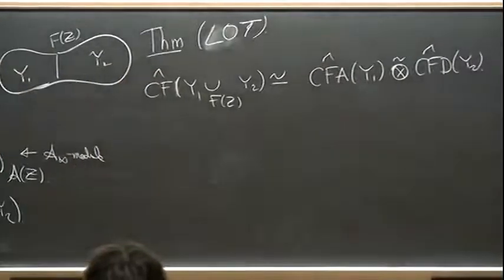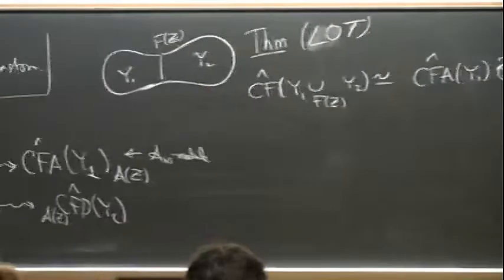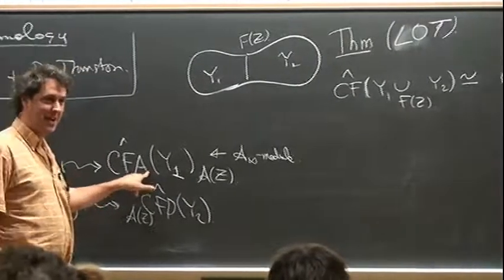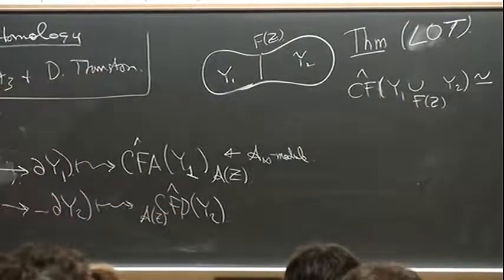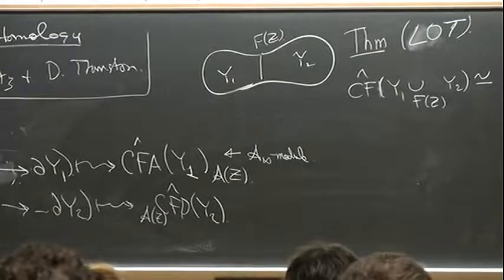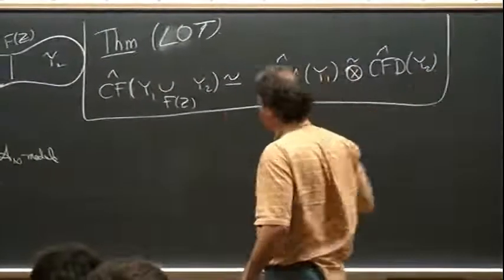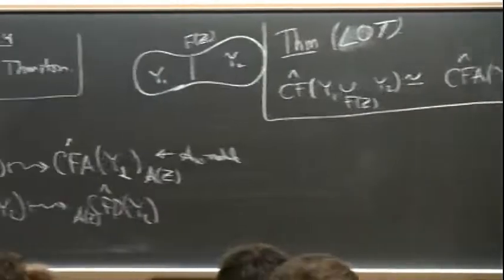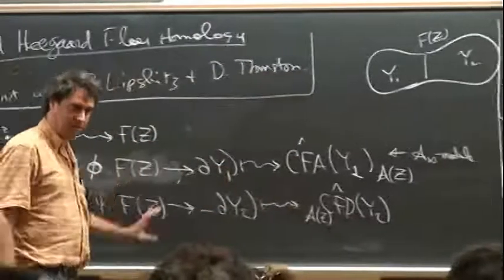A means that the holomorphic curve counting takes place in the algebra action, and D means the holomorphic curve counting takes place in the differential. These are two different invariants that count holomorphic curves in slightly different ways.